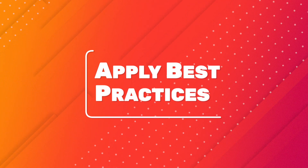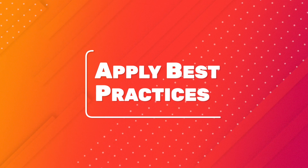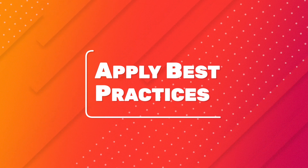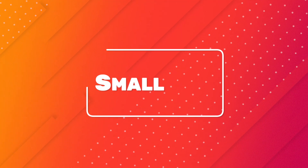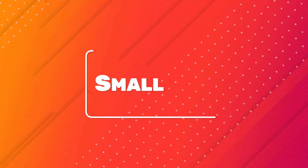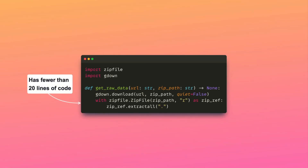Let's make the code more readable by incorporating the six practices mentioned at the beginning of this video. A function should be small to enhance its readability. Ideally, a function should not exceed 20 lines of code. Additionally, a function's indentation level should not exceed 2.